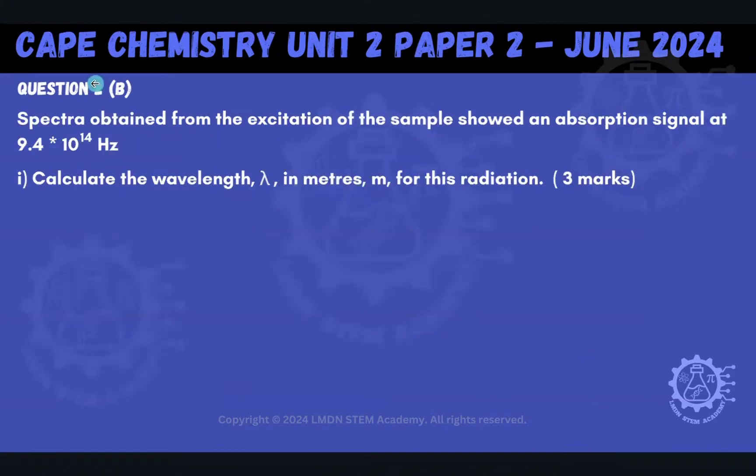So let's go ahead now to B. B says spectra obtained from the excitation of the sample showed an absorption signal at 9.4 times 10 to the 14 hertz. So here we're given a frequency. And so we're being asked to calculate the wavelength, lambda, in meters for this radiation. Here's our strategy.